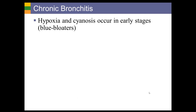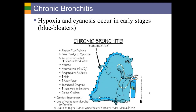People with chronic bronchitis tend to become hypoxic — not getting sufficient oxygen to their tissues — early in the disease. They will also tend to be cyanotic, where extremities become blue. So you have this individual with air hunger and a bluish tone to their skin. They are sometimes referred to as 'blue bloaters' because of that blue skin tone and difficulty breathing.